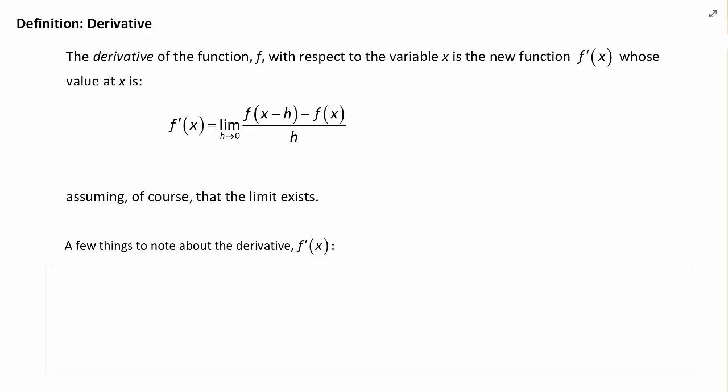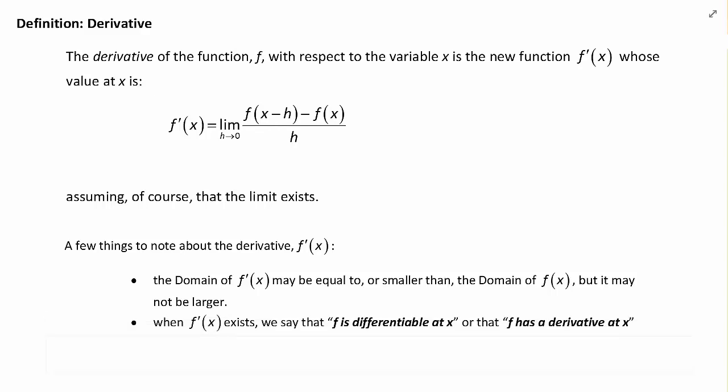Now, there's a few things we need to note about this new derivative function f prime of x. First of all, the domain of f prime of x may be equal to or smaller than the domain of f of x, but it certainly may not be larger. When f prime of x exists, we say that f is differentiable at x, or that f has a derivative at x. A function that is differentiable at all points in its domain is called a differentiable function.